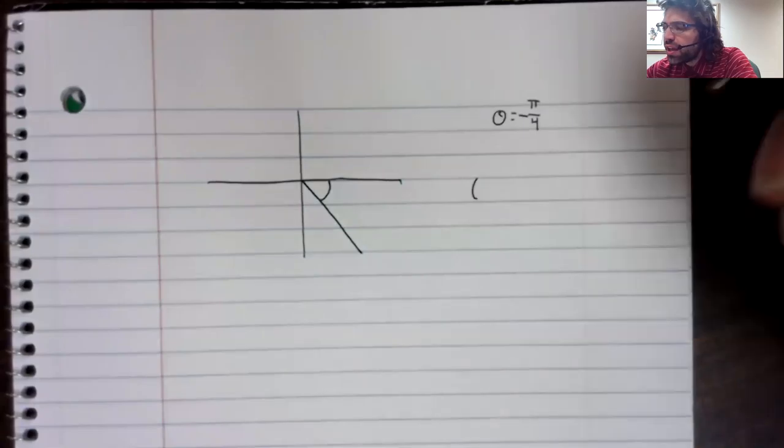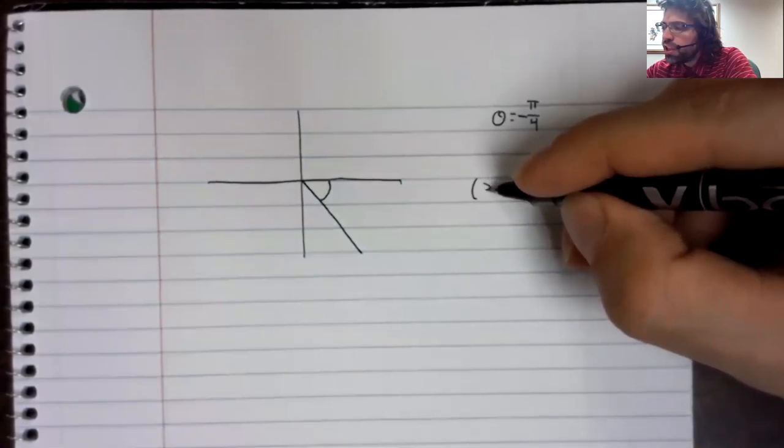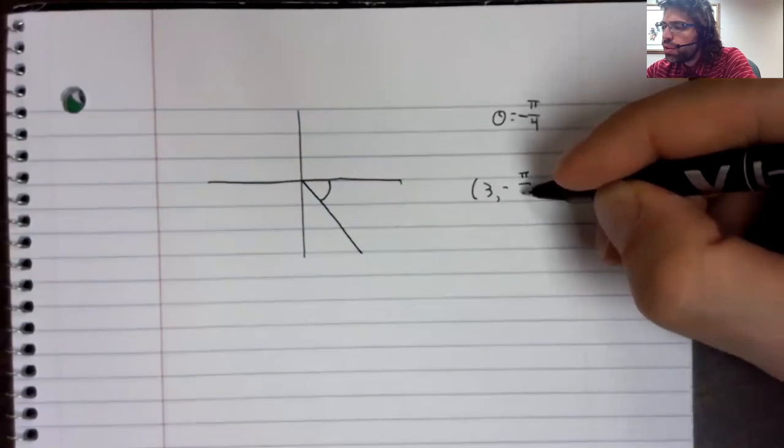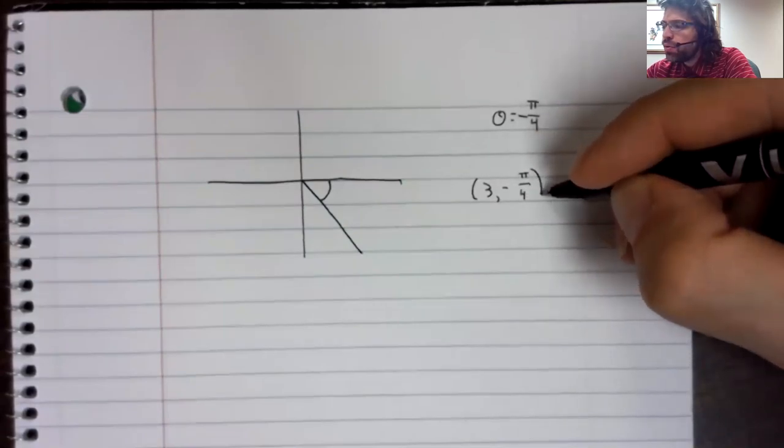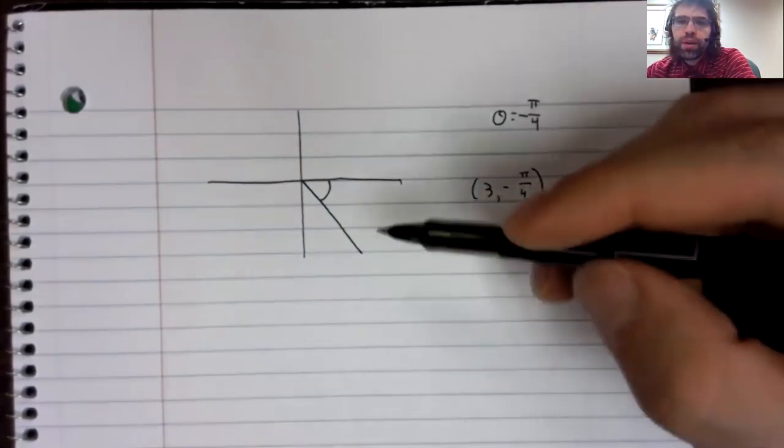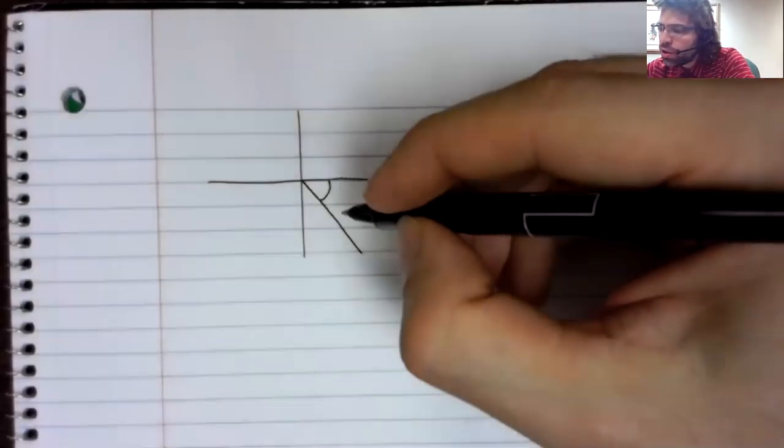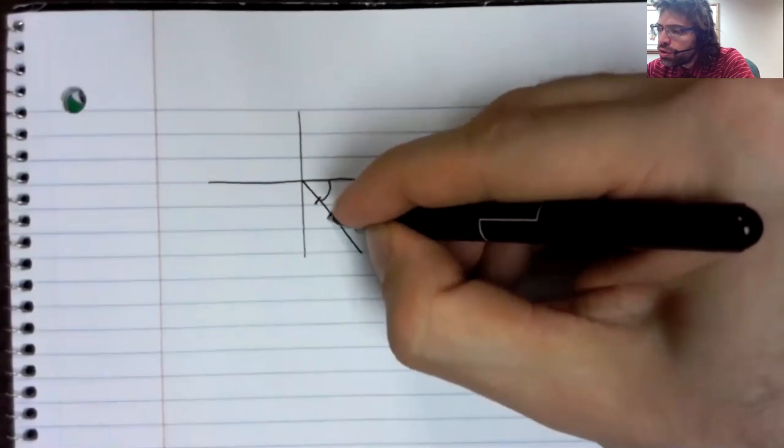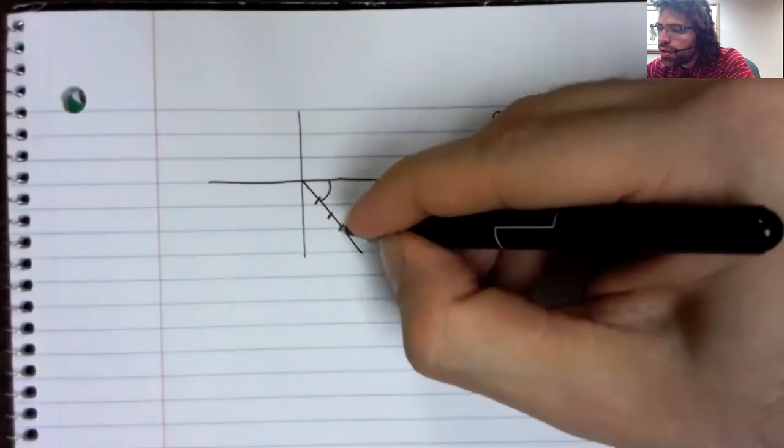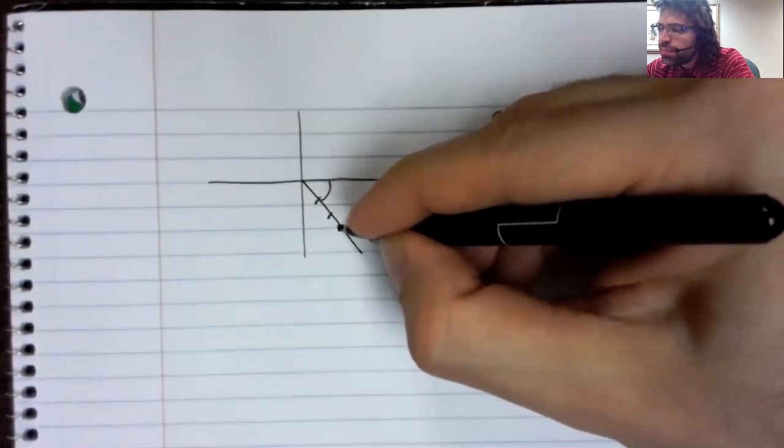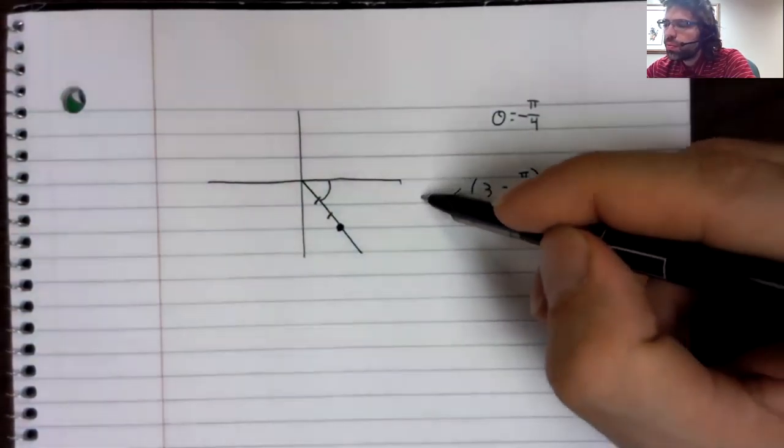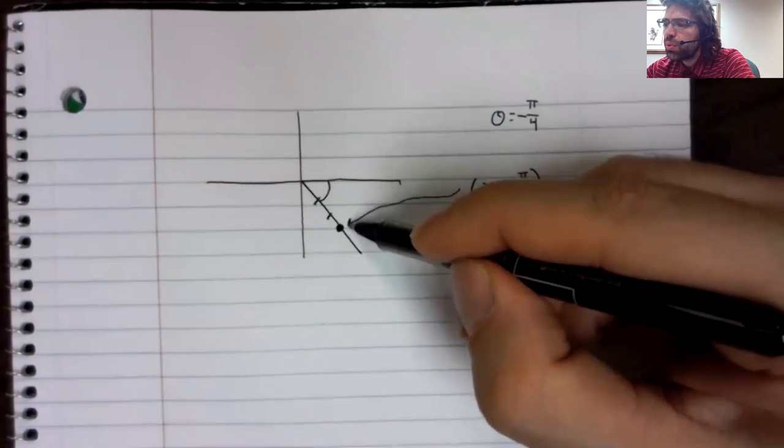And if we have 3 comma negative pi over 4, well, here's the angle. And we count 1, 2, 3. And here's that point.